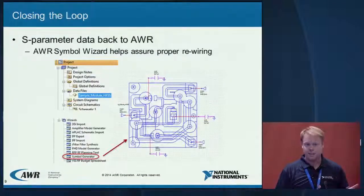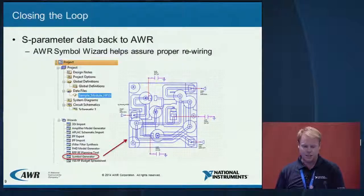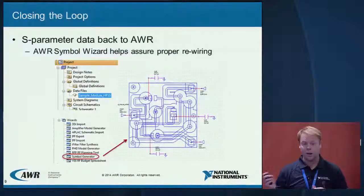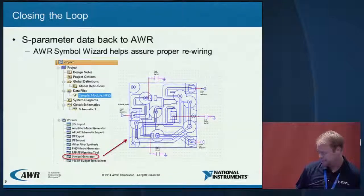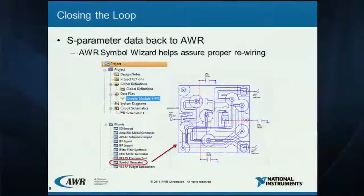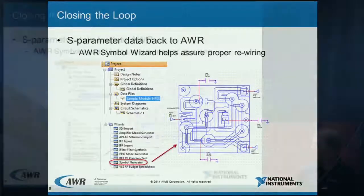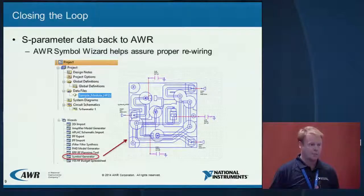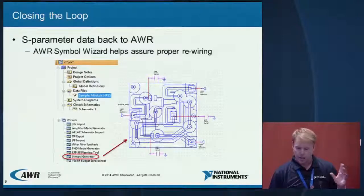Within AWR, one nice feature is that you can create a symbol that looks like your layout. This is done using our symbol generator wizard, a standard feature in AWR. You open the wizard, point to your EM layout, and it creates a nice symbol so you can wire it up nicely. There are some surface mount components in the original EM structure — some capacitors wired in at the circuit level — and of course your input and output ports, so you can make sure everything is wired up correctly.